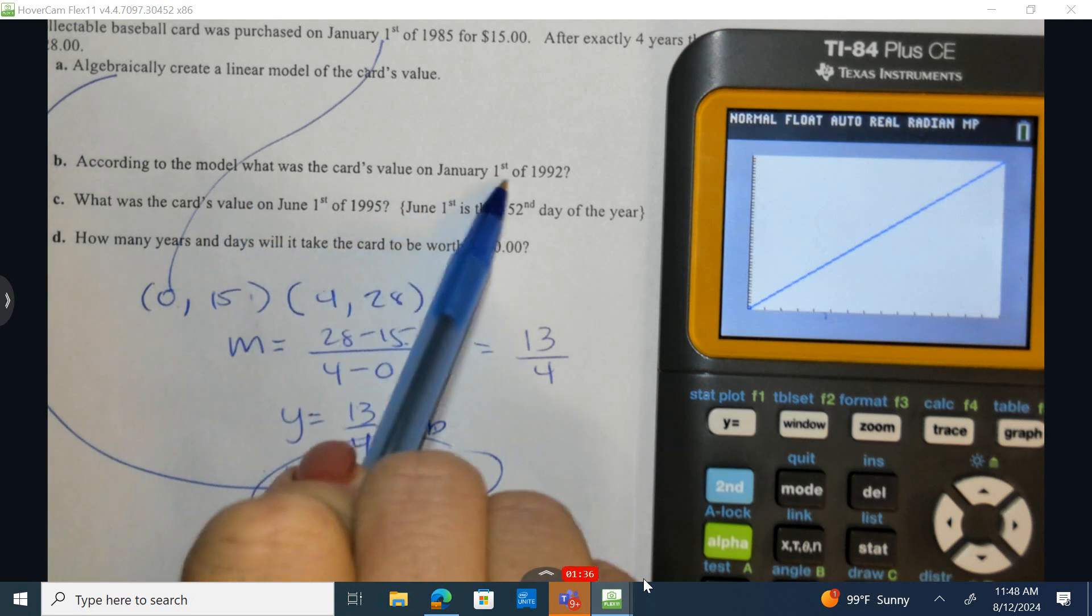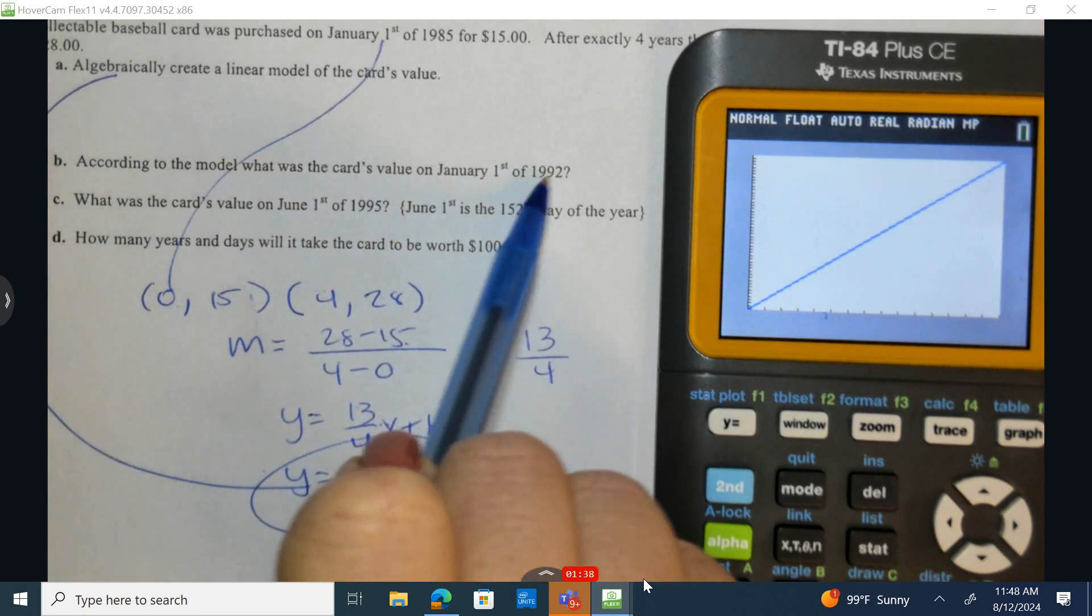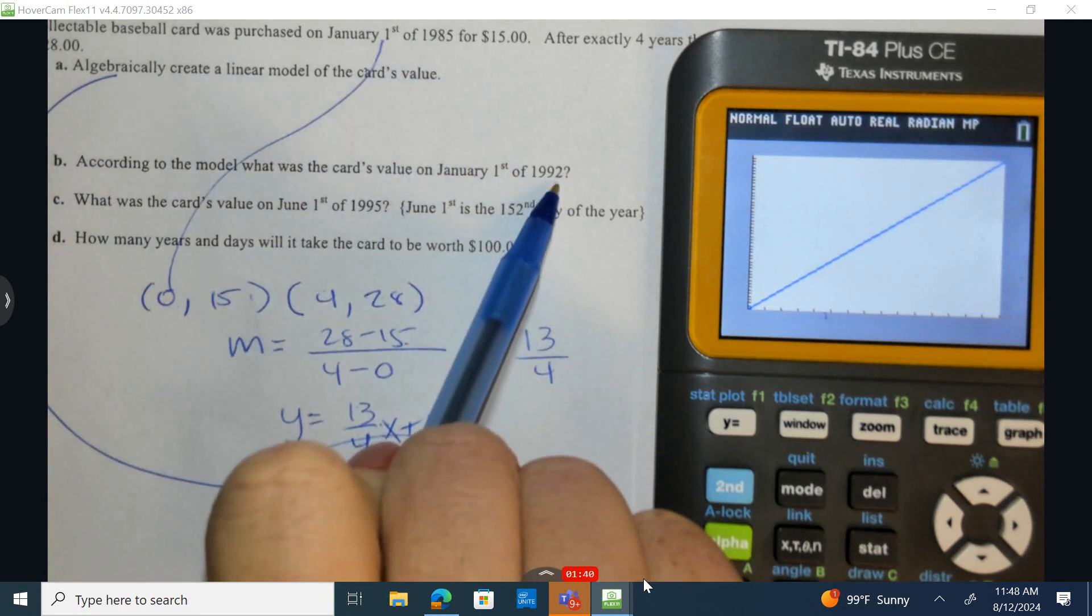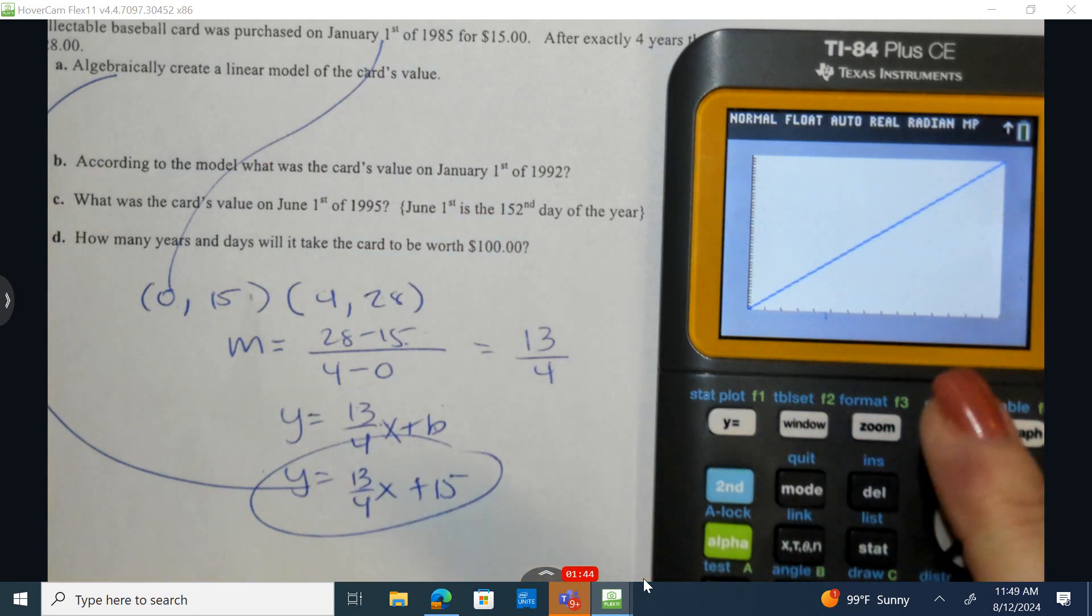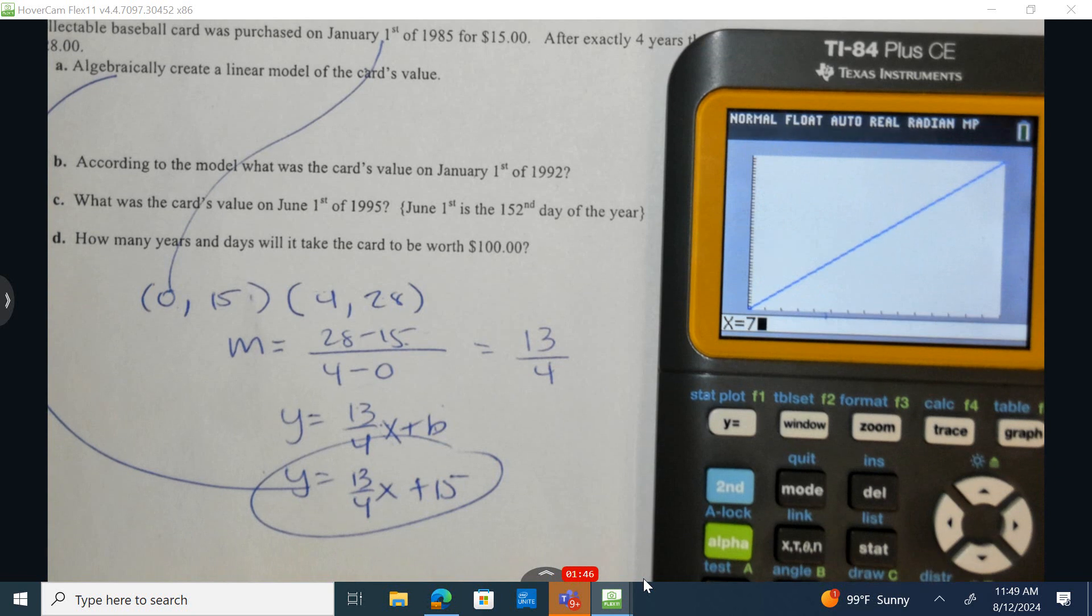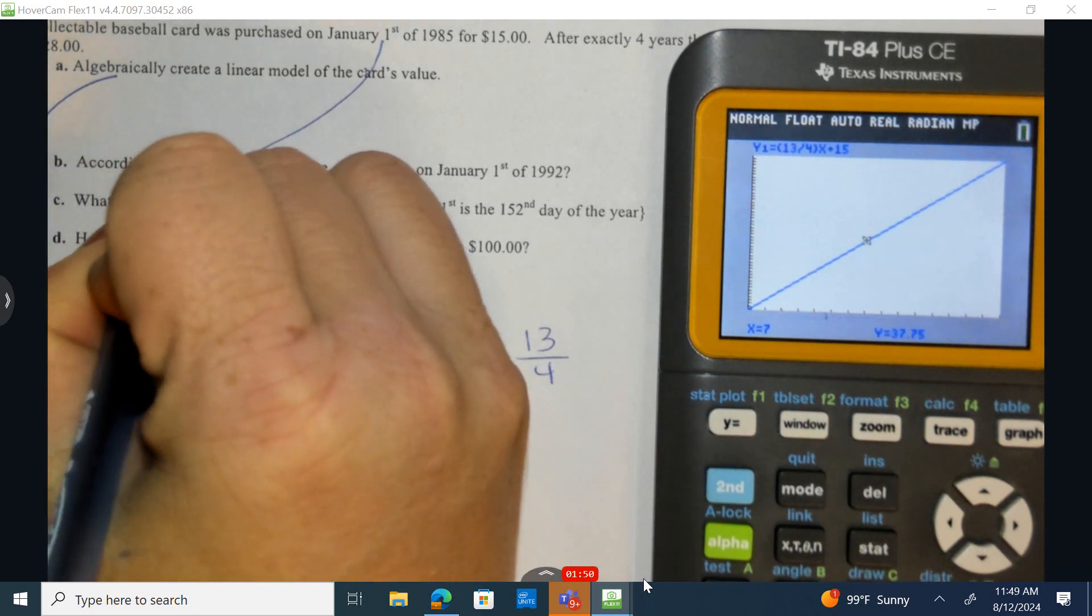According to the model, what was the card's value January 1st, 1992? So if we take 1992 and we subtract 1985, we get 7. 7 second trace value. So $37.75.